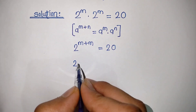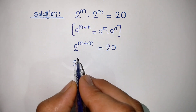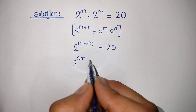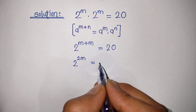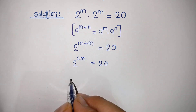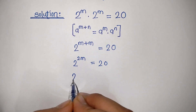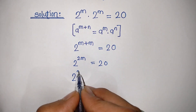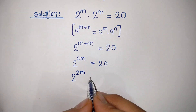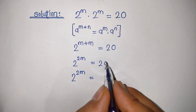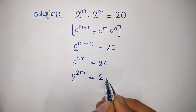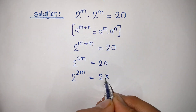Now 2 to the power m plus m is 2m, so 2 to the power 2m is equal to 20. We can write this 20 as 2 times 10.